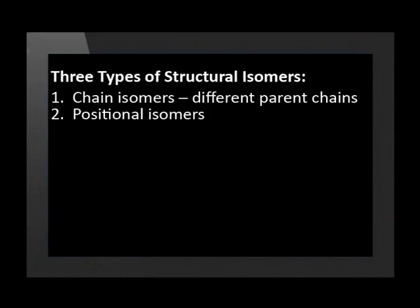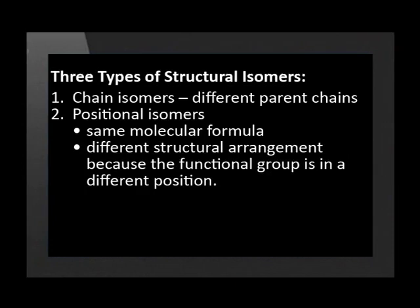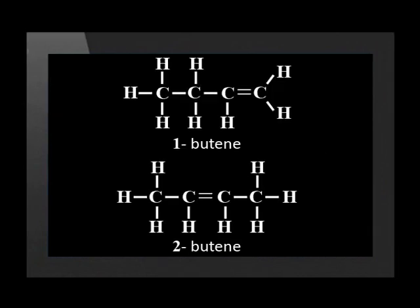The second type of isomerism is positional isomerism. Positional isomerism is when molecules have the same molecular formula but different structural arrangement because the functional group is in a different position. An example of positional isomerism is but-1-ene and but-2-ene. You can see that the position of the double bond has shifted from the first carbon to the second carbon.